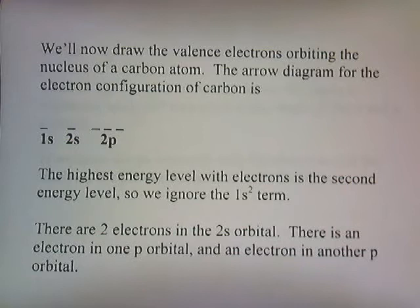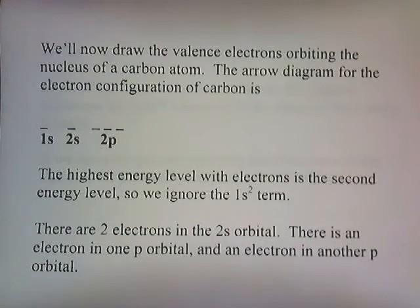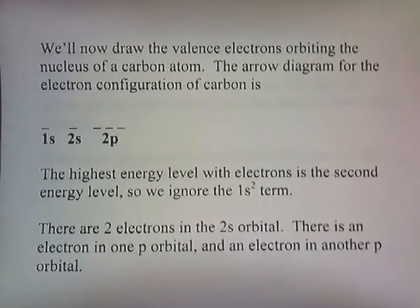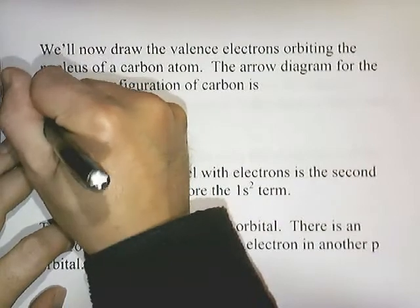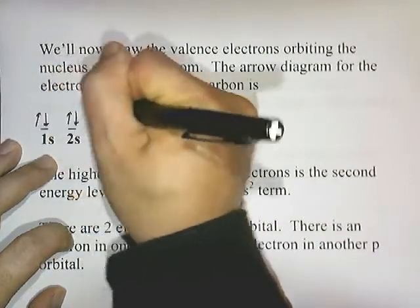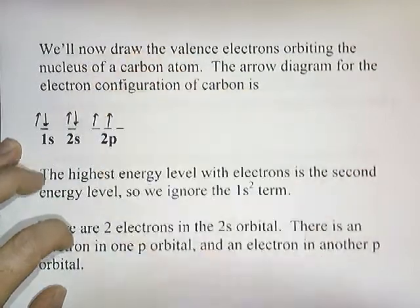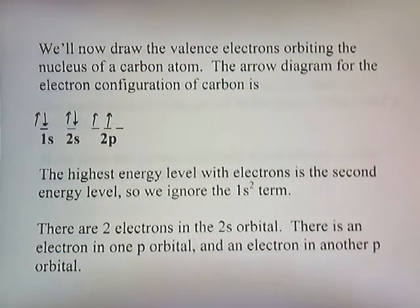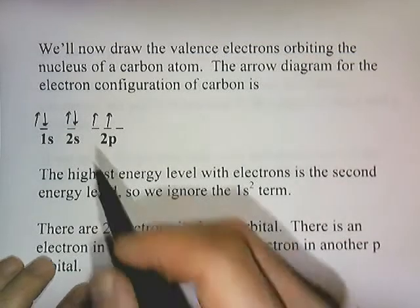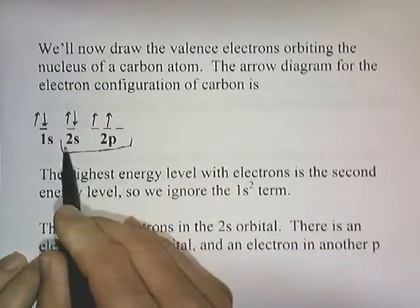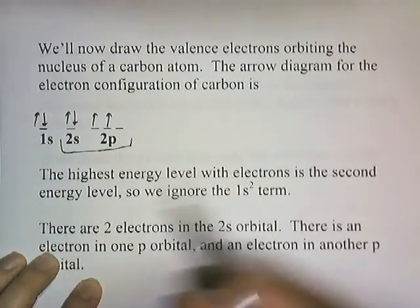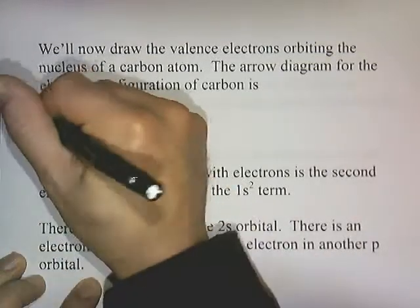Let's draw the valence electrons orbiting the nucleus of a carbon atom. This time I'm going to draw the arrow diagram for the electron configuration. Carbon has atomic number 6, so it has six electrons total. Filling in the arrow diagram: one, two, three, four, five, six. The highest energy level with electrons is the second energy level, so we ignore the 1s2 term. We're only interested in the outermost or valence electrons.